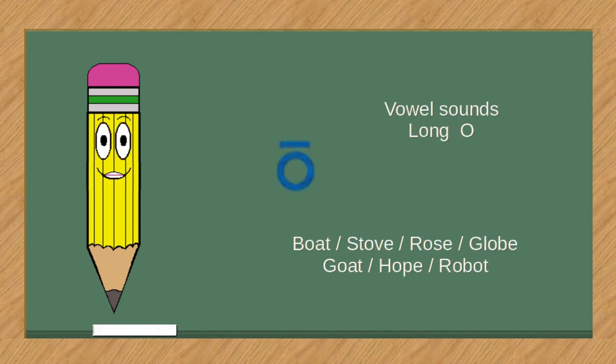Vowel sounds, long O. Boat, stove, rose, globe, goat, hope, robot.